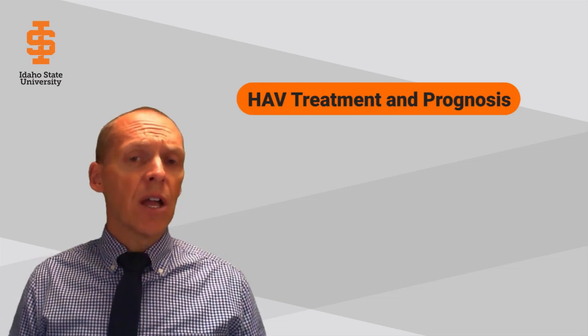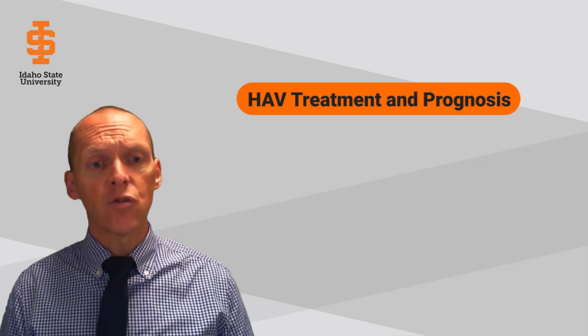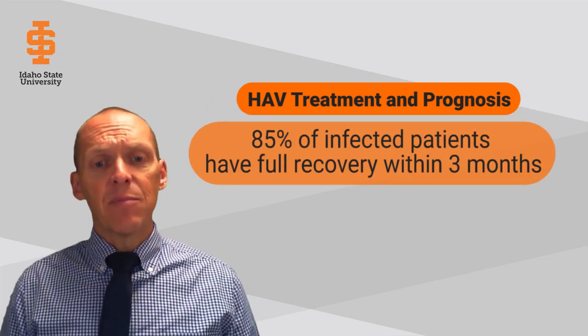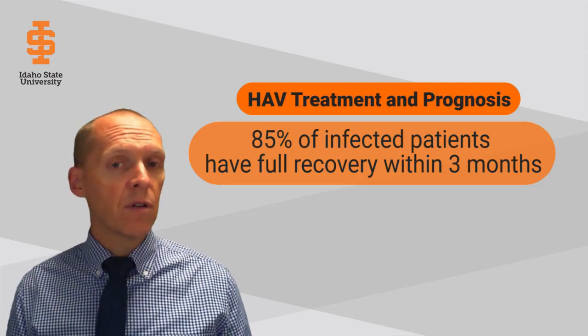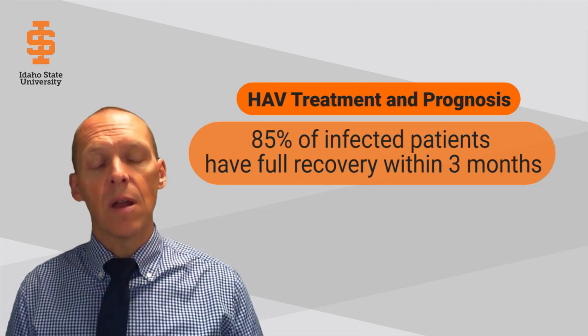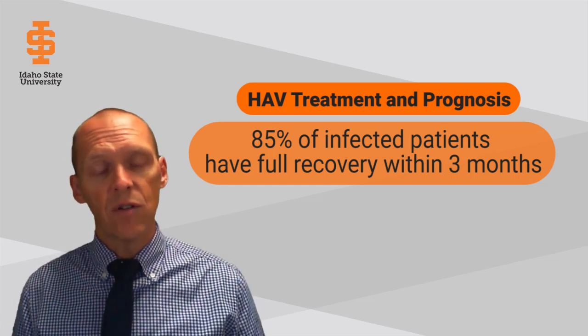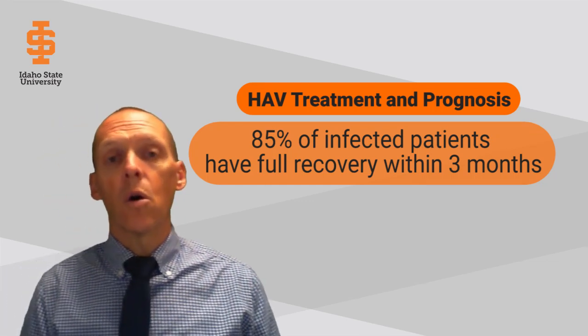There are no specific antiviral medications or treatment for hepatitis A — primarily supportive treatment. 85% of infected patients have a full recovery within three months. Fatalities are extremely rare with hepatitis A and may occur in individuals who have pre-existing liver disease, cirrhosis, or other forms of hepatitis on top of that. Some patients may experience a relapse during the six months after an acute illness.